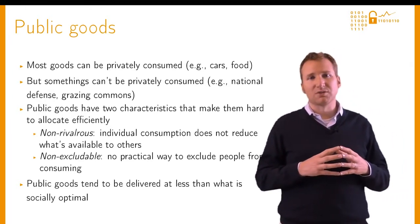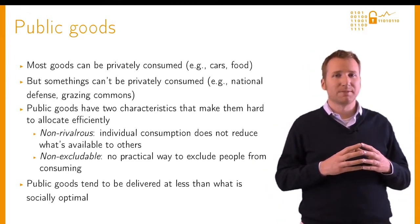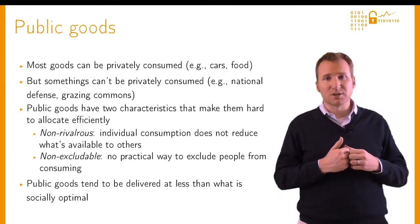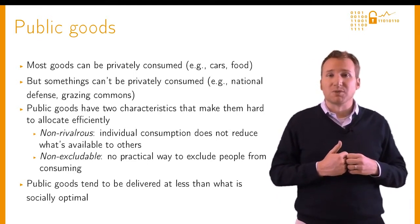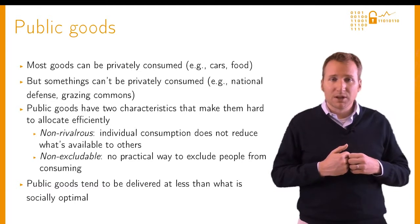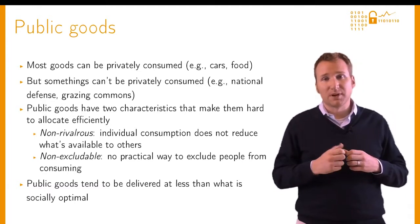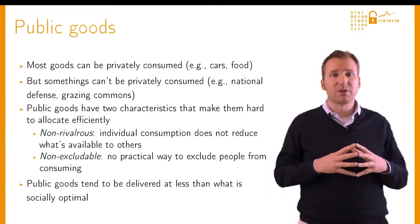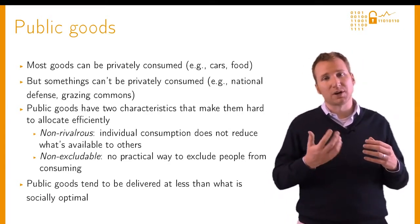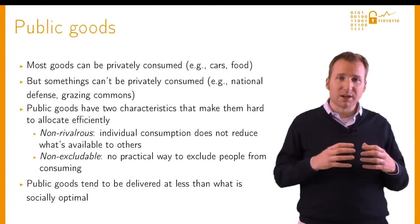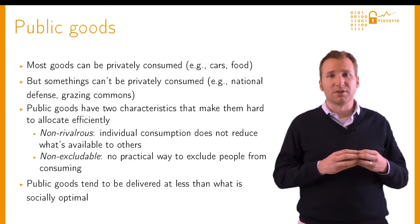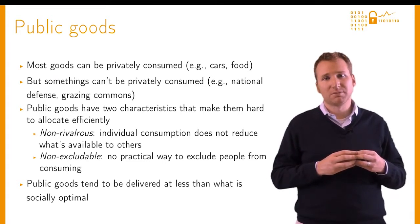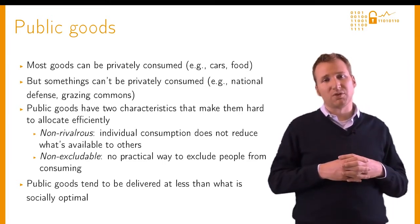Public goods have two characteristics that make them different from traditional goods. First, they're non-rivalrous, which means one individual's consumption does not prevent another person from consuming the good as well. Second, they're non-excludable in that there's no practical way to keep others from consuming them too. Sometimes you only have one or the other, but when you have both, you've got a public good. And whenever this happens, there can be a problem because you tend to have fewer public goods than you'd like from society's perspective. You can also get problems with free riders who don't pay.